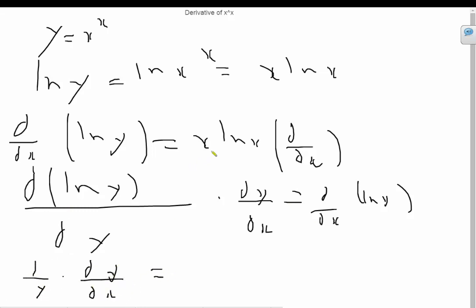And so this simply becomes 1 over y times dy by dx. And over here we have the first function times the derivative of the second function, which is x times 1 over x. So these two just cancel off. Plus the second function times the derivative of the first function, and this is just ln x times 1.